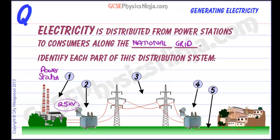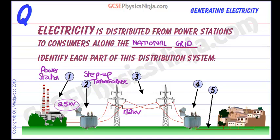If we were to have that voltage and put it along the distribution lines — the pylons and the cables which take it around the country — we would lose a lot of energy in heat. So what we use is something called a step-up transformer, which steps up this voltage to a much higher voltage, typically about 132 kilovolts — 132,000 volts. That's because we then reduce the energy loss in the cables. Transmitting at a higher voltage means that we get less energy wasted as heat.